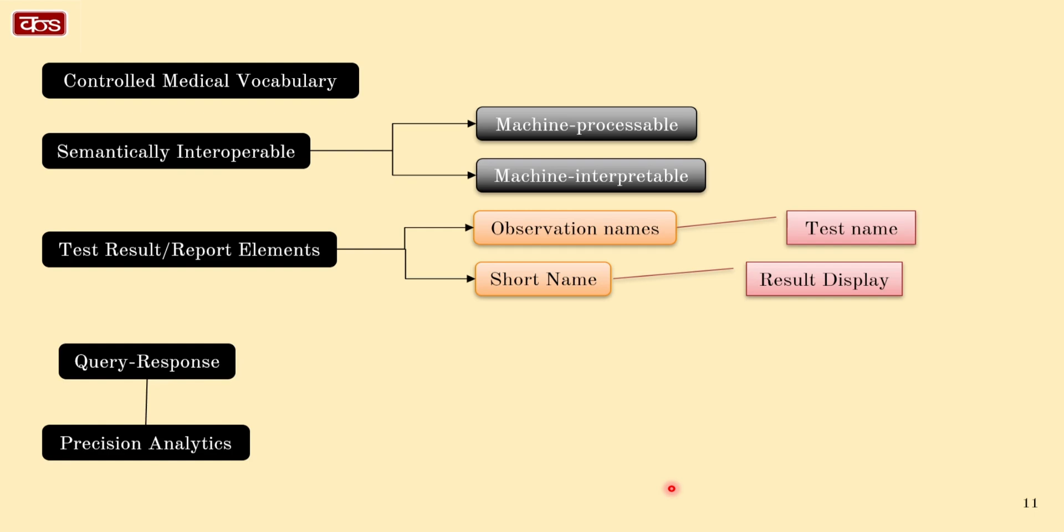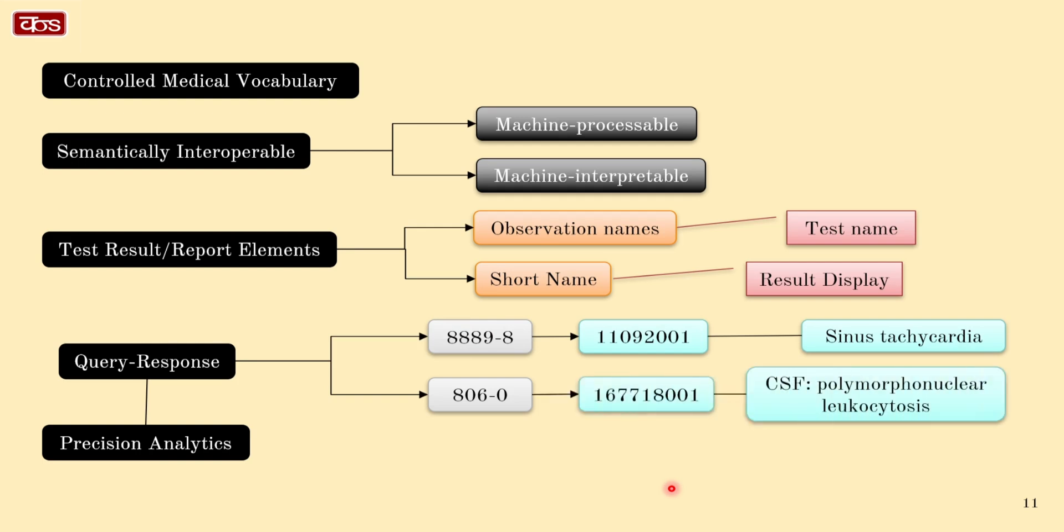We are not just looking for responses, for example: what is the heart rate by pulse oximetry, code 8889-8? Or how many leukocytes are there in the CSF as found by manual count, code 806-0? Incidentally, SNOMED is excellent as text-based responses, for example sinus bradycardia for the first or cerebrospinal fluid polymorphonuclear leukocytosis for the next. Seamless integration with auto analyzers through programming is another very interesting aspect. Let us try and understand this in some detail in the next slide.